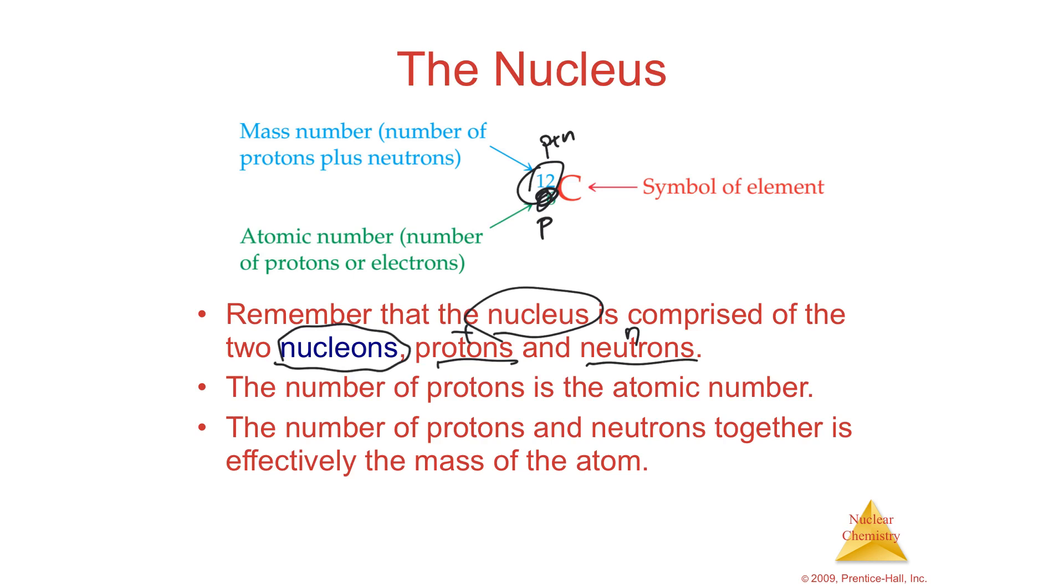So as the mass number goes up, that's called an isotope. An isotope is, iso meaning the same, so you have the same number of protons, but the differing number of neutrons. So it's different forms of the same element.